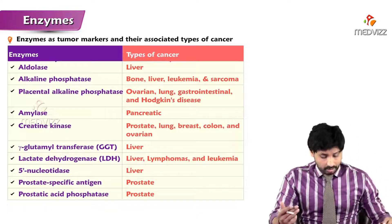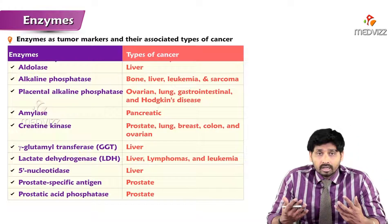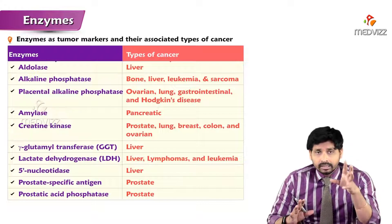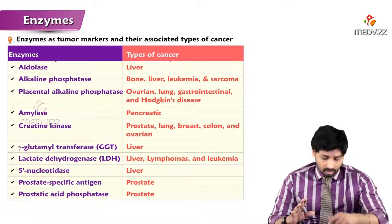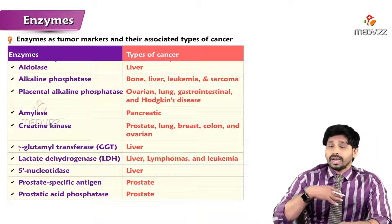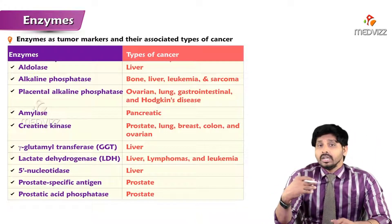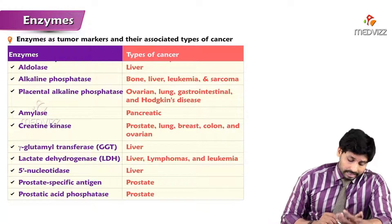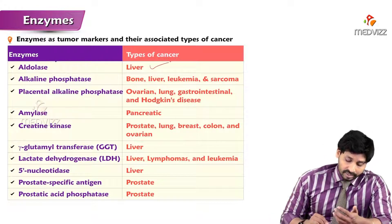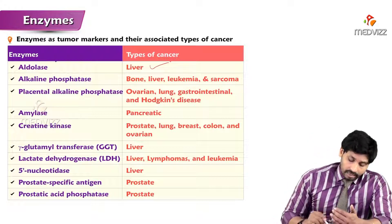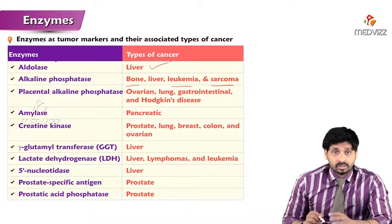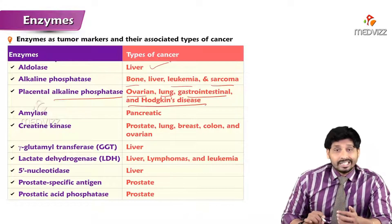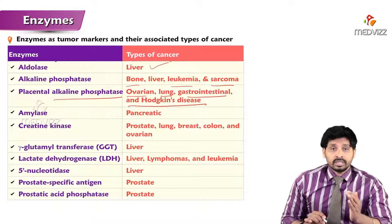Looking at this table of tumor markers — apart from acid phosphatase, there are several enzymes associated with cancer. Aldolase is elevated in liver cancer. Alkaline phosphatase is elevated in bone cancers, leukemias, and sarcomas. Placental alkaline phosphatase is elevated in ovarian cancer, lung cancer, gastrointestinal cancer, and Hodgkin's disease.